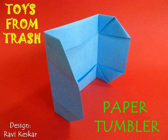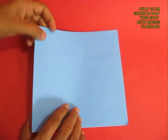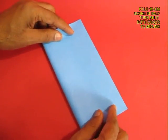To make this very beautiful paper tumbler you need a stiff square of paper 15cm on the edge.